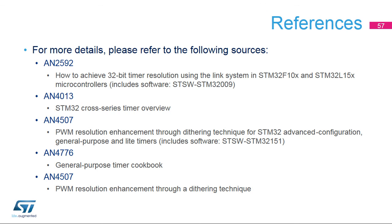Three application notes complement the timer sections in the reference manual. AN2592 gives a practical implementation of a 32-bit timer made of two synchronized 16-bit timers, useful for understanding timer synchronization, with a software example. AN4013 provides a more detailed overview of all timer features with firmware examples. AN4507 presents PWM resolution enhancement by dithering techniques, with a software example. AN4776 starts with reminders on timer operating principles and contains a collection of examples for standard timer use cases, with a software example.